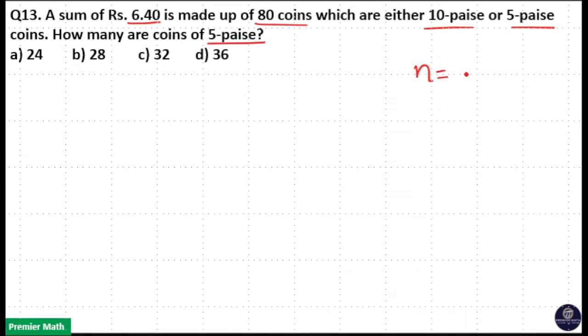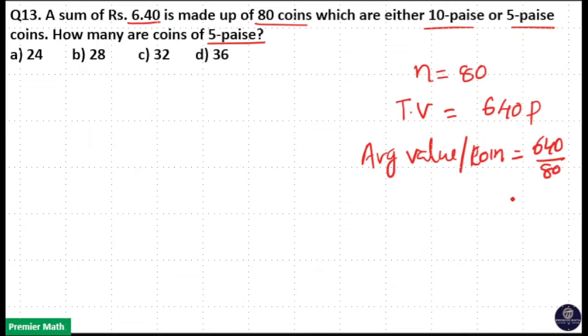Here total number of coins is equal to 80 and total value of coins is equal to 6.4 rupees, that means 640 paise. So here total value divided by total number of coins will give you average value per coin. That means 640 divided by 80, that will give you 8 paise.